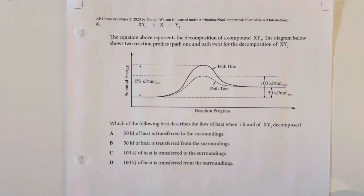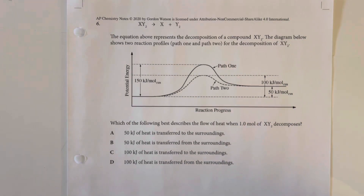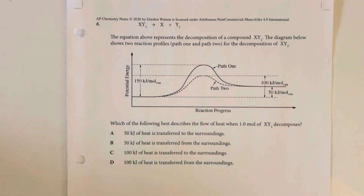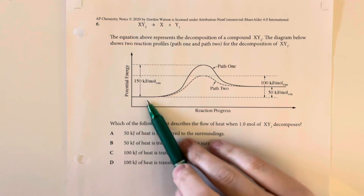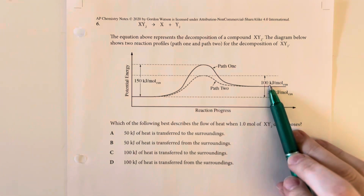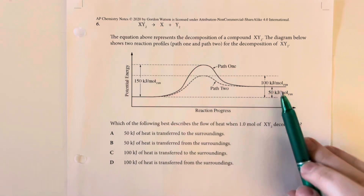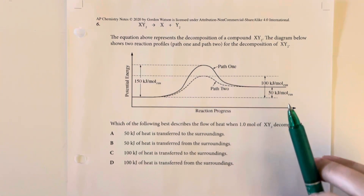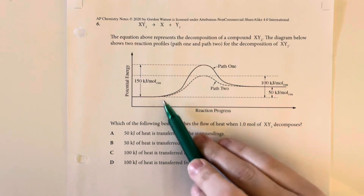The equation above represents the decomposition of the compound XY₂. The diagram below shows the reaction profiles — path 1 and path 2 — for the decomposition of XY₂. Which of the following best describes the flow of heat when 1 mole of that compound decomposes? When we decompose, we initially have a lower energy state than post-decomposition, so we have increased our potential energy from the initial state.